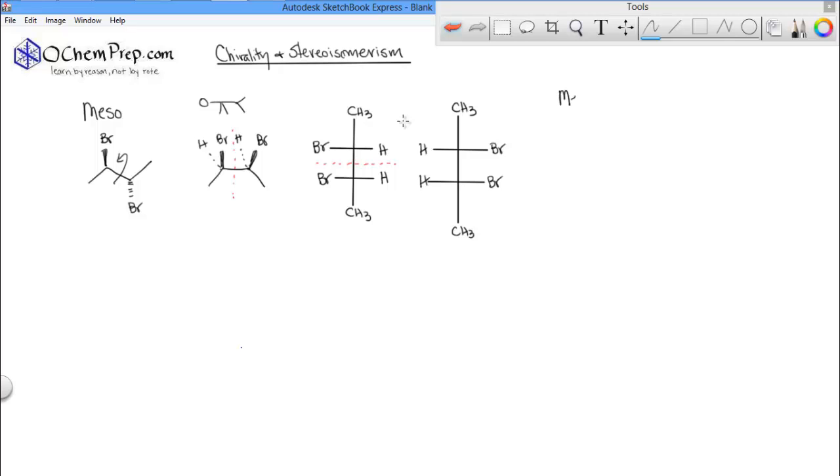So, what is a mesocompound? A mesocompound is a molecule that contains chiral carbons, but is not chiral due to symmetry.